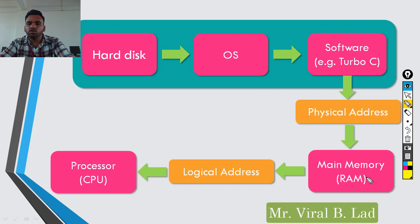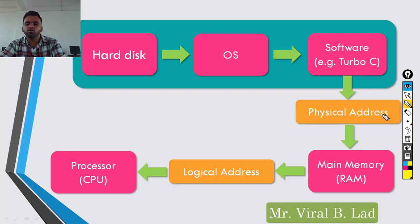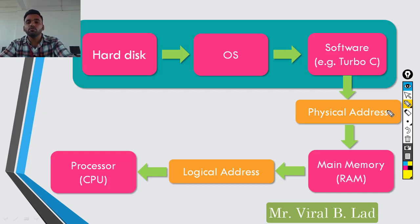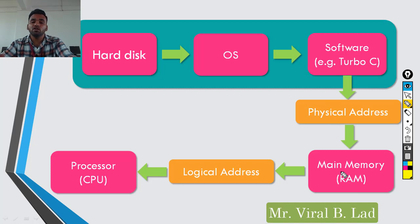The operating system shifts the application's information into main memory. It assigns a particular address — called the physical address — indicating where in memory to store information, where to replace it, and where to remove it. This management is handled by a component of the operating system called the memory manager.